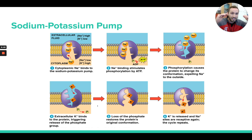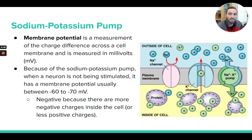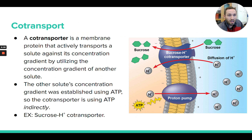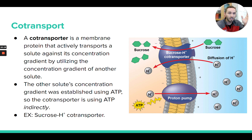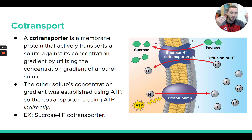Another example of active transport is something called a co-transporter. A co-transporter is a transport protein that's actually moving two different substances across the cell membrane. One of the substances it's moving is going to be moving down its concentration gradient from high to low, which is what the universe wants. But the other substance that it's moving is going to be going against its concentration gradient — from an area of lower concentration to an area of higher concentration. So in a co-transporter, you have both things happening at the same time.